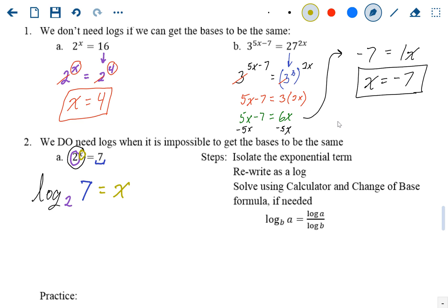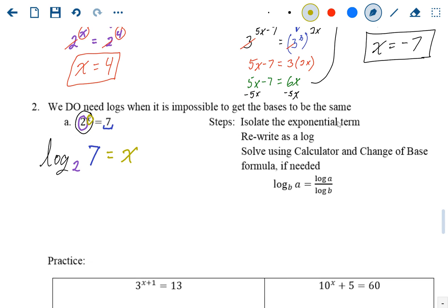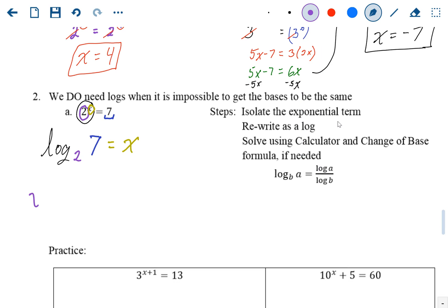So we need to find log base 2 of 7 equals x. Now the only way to do that is using the change of base formula. If you want to find x, it's going to be the common log of the big number, 7, divided by the common log of the base, 2. You'll need a calculator to solve that. Log 7 divided by log 2 is about 2.81.